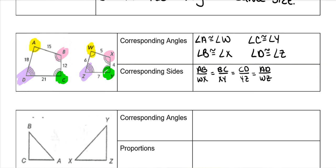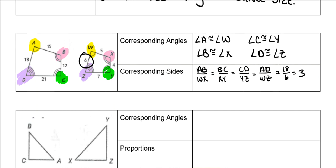They always have a scale factor. In this specific example, I'm going to use AD and WZ, because that's the last one. So 18 over 6, which is 3 — so it has a scale factor of 3.